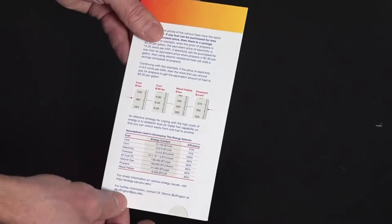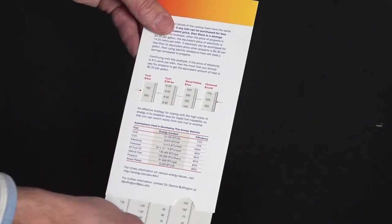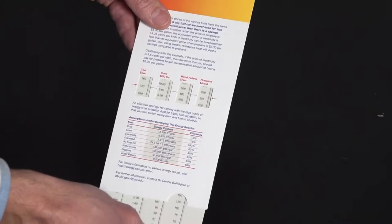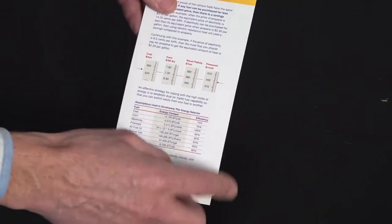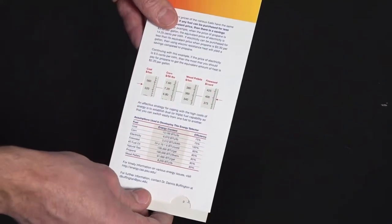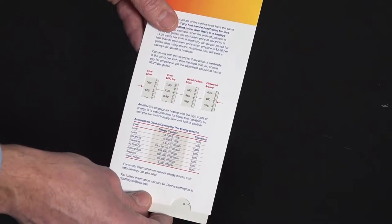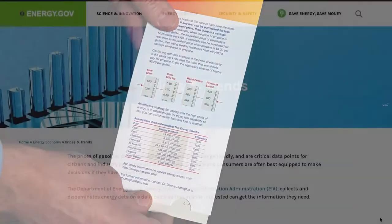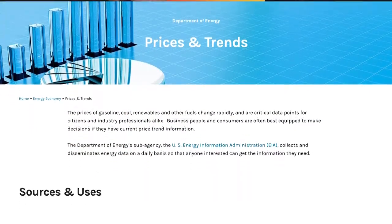Inside the energy selector is a slider that can be moved up or down to change the energy prices that show up in the windows. So, how do you use this device?